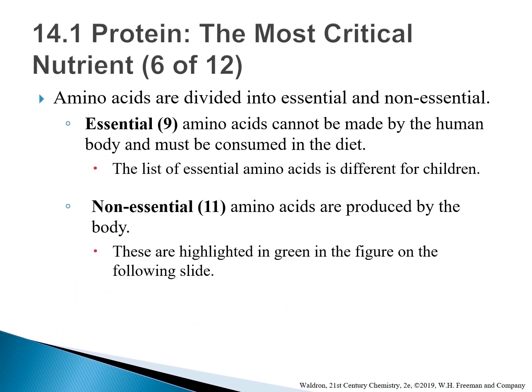Amino acids can be divided into two groups: essential and non-essential. There are 11 non-essential amino acids — the adult human body can produce these on its own. There are 9 essential amino acids, deemed essential not because they play a more important role, but because they must be included in the adult human diet for humans to survive. The human body cannot make these amino acids, so we must consume them.